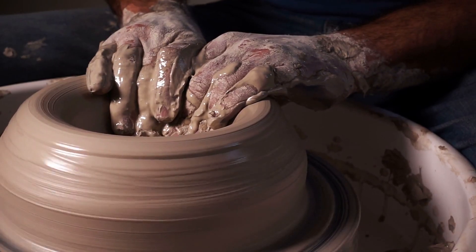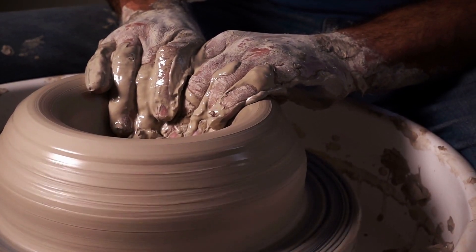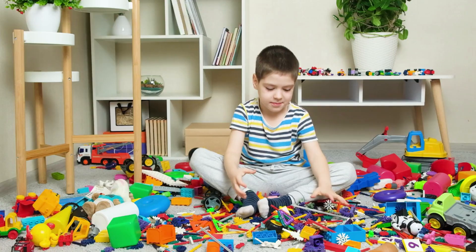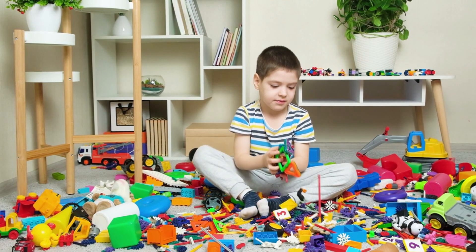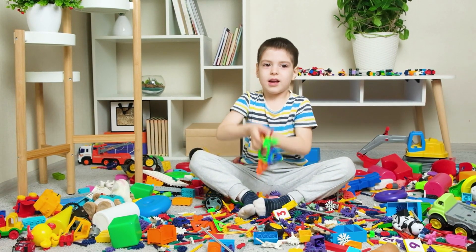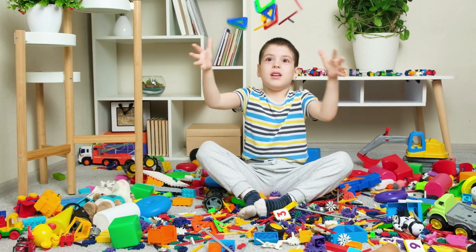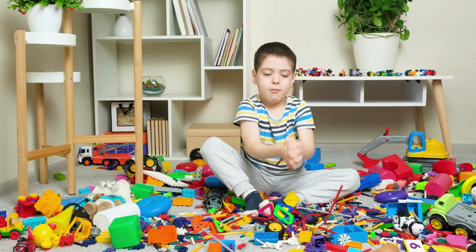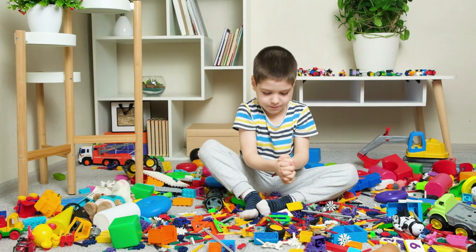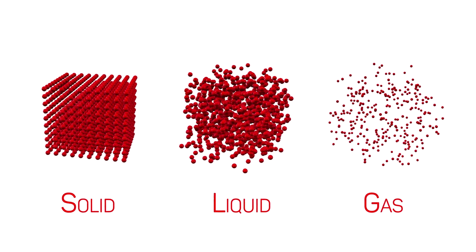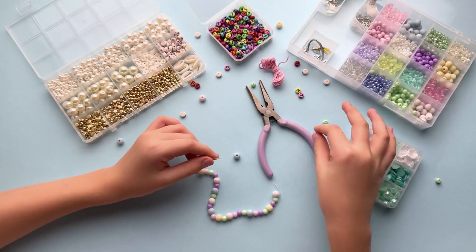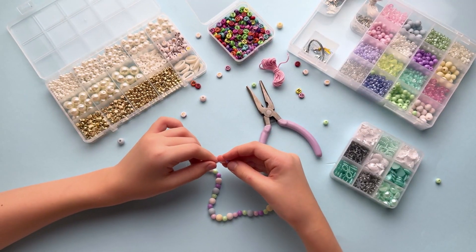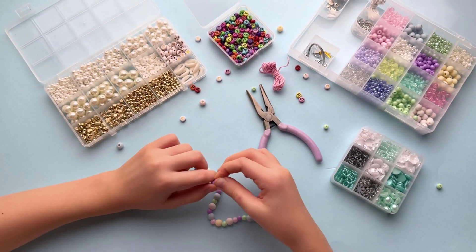Materials are the substances used to make objects. They can be grouped by properties: shiny, dull, hard, soft, transparent, opaque, soluble, insoluble. They have mass and volume, and all of them are examples of matter. Grouping helps us choose the right material for the right use.